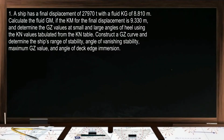Let us solve this problem. A ship has a final displacement of 27,970 tons with a fluid KG of 8.810 meters. Calculate the fluid GM if the KM for the final displacement is 9.330 meters. Determine the GZ values at small and large angles of heel using the KN values from the KN table. Then construct a GZ curve and determine the ship's range of stability, angle of vanishing stability, maximum GZ value, and angle of deck edge immersion.